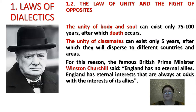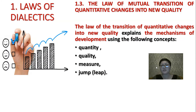For this reason, the famous British Prime Minister Winston Churchill said: England has no eternal allies — England has eternal interests, and they are always at odds with the interests of its allies. So the law of unity and struggle of opposites explains the root of development, and the root of development are opposites and contradictions.